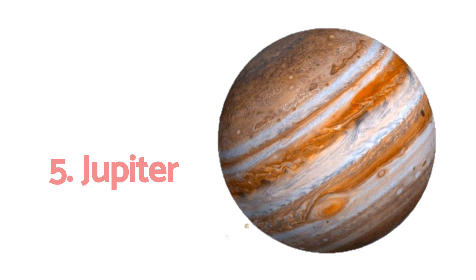Jupiter. This is Jupiter. What planet is this? This is Jupiter. Yes! Jupiter is the fifth planet from the Sun in our solar system. It is the largest planet. It has a spot on it and it is known as the great red spot.